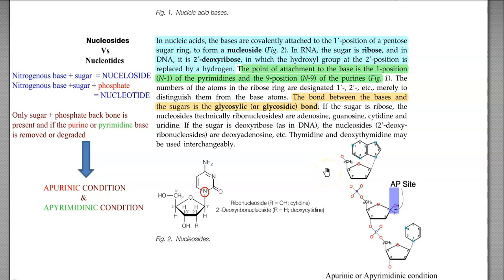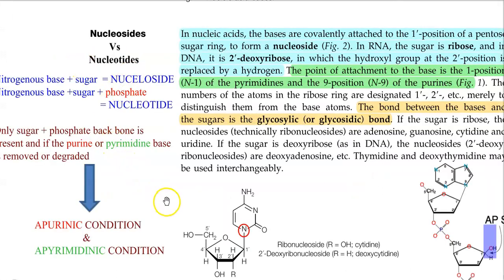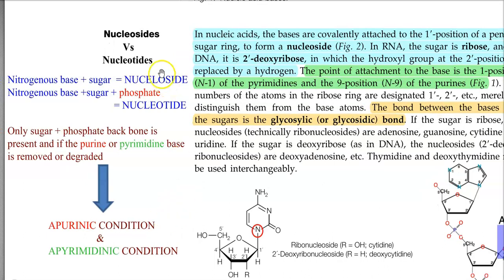We have seen how polynucleotide chains are formed by dehydration synthesis. Now we will try to understand some important terms: nucleosides and nucleotides. A nucleoside refers to a nitrogenous base and sugar alone — there is no phosphate. If a nitrogenous base plus sugar plus phosphate is present, that is called a nucleotide.